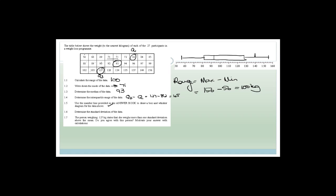Now it says determine the standard deviation of the data. It says the person weighing 127 kilograms says that she weighs more than one standard deviation above the mean — do you agree with her? Let's pretend the standard deviation was 7.4 kg. If that was the case, then one standard deviation above the mean would be 93 plus 7.4 equals 100.4, and below would be 93 minus 7.4 equals 85.6. She weighs 127, so no — she is not within one standard deviation. All you have to do is work out the standard deviation, then add it to the median of 93.